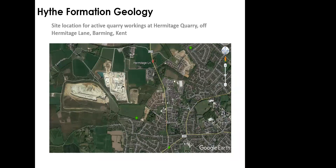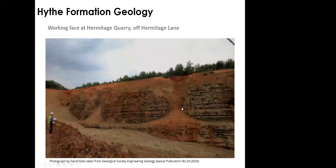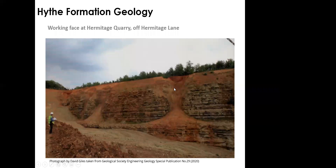A picture shows the west side of Maidstone in the Barming area, with a quarry and processing plant where the Hythe beds are being removed. Another shot — taken by David Giles and featured on the front cover of the Geohazards booklet published by the John Soc — shows the Hythe beds with quite large features penetrating through the bedrock surface, where materials have washed down and infilled the gulls and fissures.